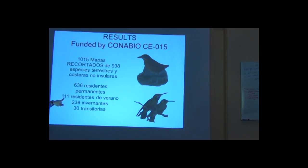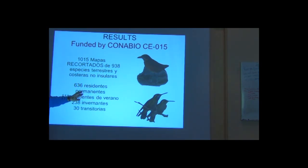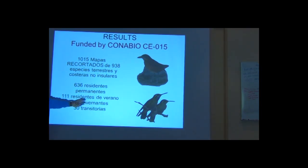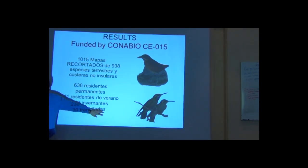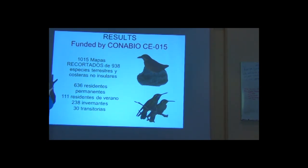We decided to make maps for these sets of species that are only present during summer — breeders that disappear in the winter. We have a set of species that are only present in winter, and we have 30 species that are only present as transients. This is a very useful way that we can recover patterns of diversity and endemism according to the migratory status of the species.